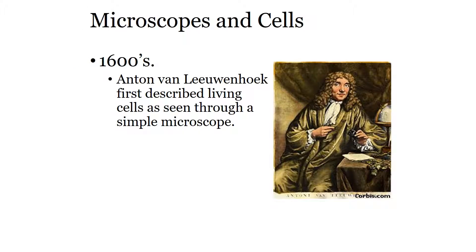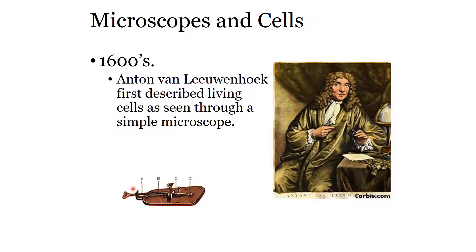The big breakthrough came in the 1600s with Anton van Leeuwenhoek, who first discovered and described cells using a very simple microscope — not like what you're used to seeing in classrooms. It just had a small hole that he looked through and was able to see things up close, and it was actually highly effective.